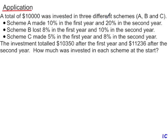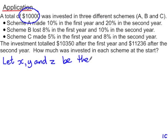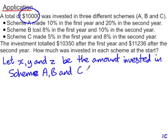We have a total of $10,000 which we're investing in three different schemes. We're told how much each scheme makes or loses in the first year and in the second year, and how much it totalled after each year. We're asked to find how much was invested in each scheme at the start. Let x, y, and z be the amount invested in scheme A, B, and C respectively.